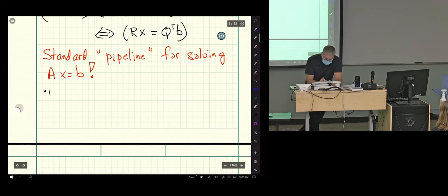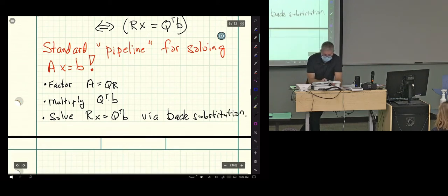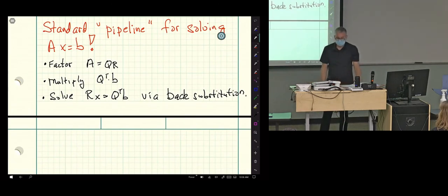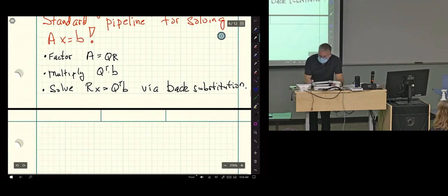Factor. Multiply Q transpose times B. Solve RX equals Q transpose times B via back substitution. So this is viewed as like the premier numerical method for solving AX equals B. This is what all the pros use. This is used by all the pros.